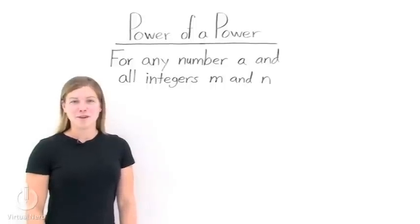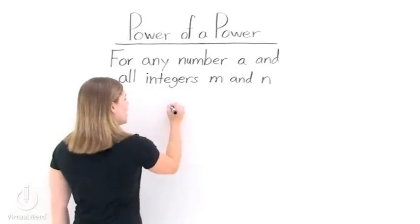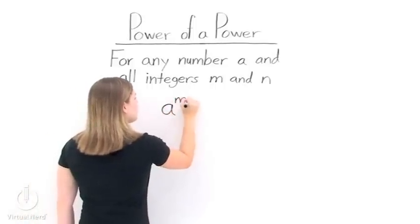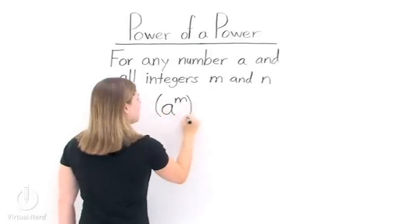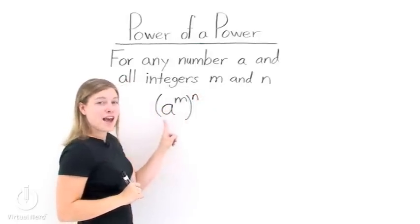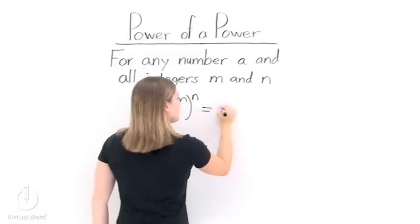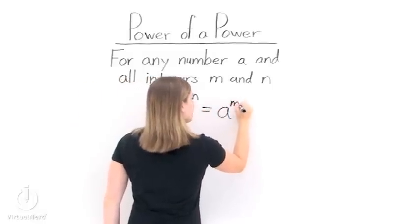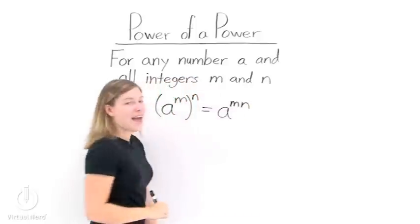Let's look at taking the power of a power. If we have any number a and two integers, m and n, if we take a to the m power and then take that whole quantity to the n power, that's the same thing as taking a to the m times n power.